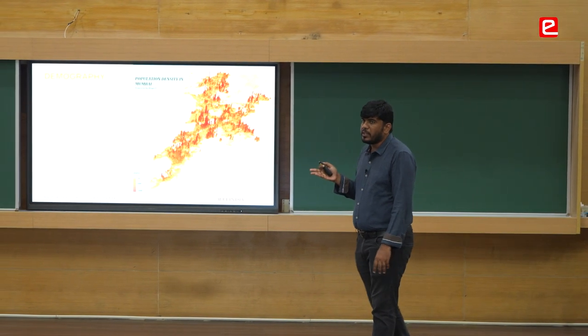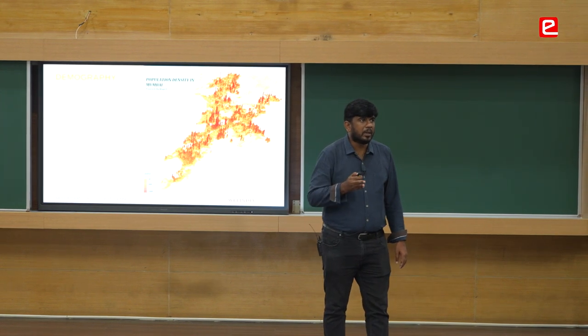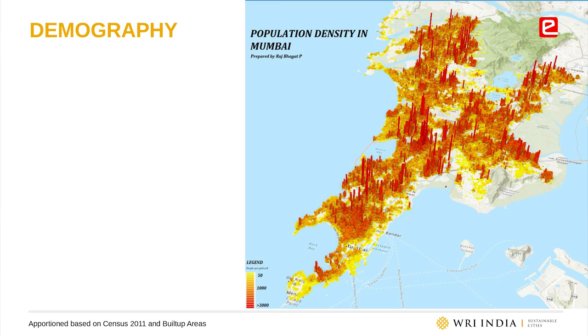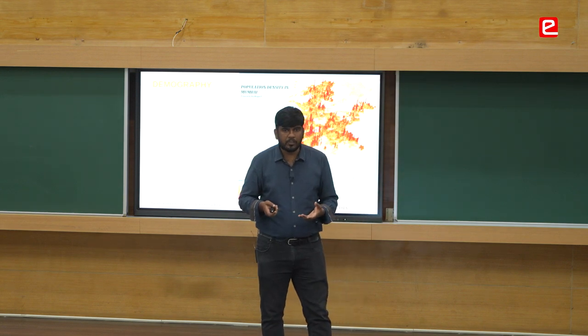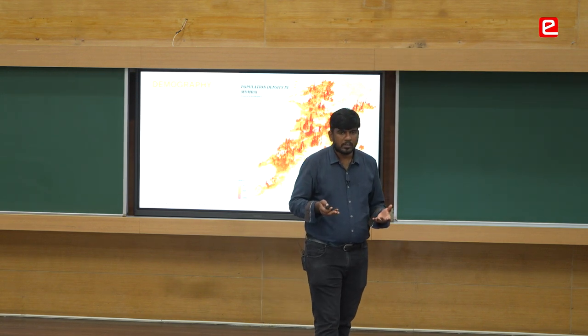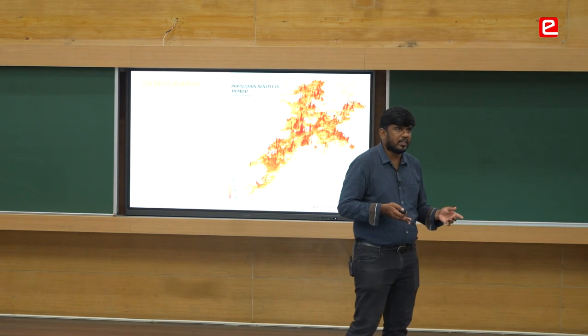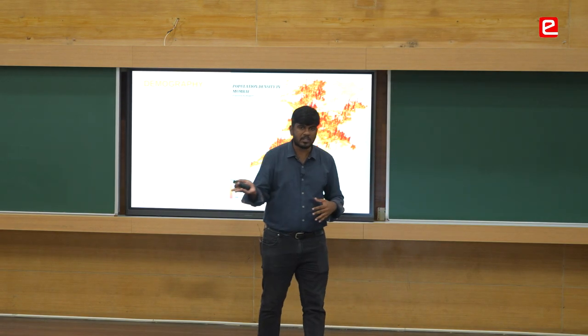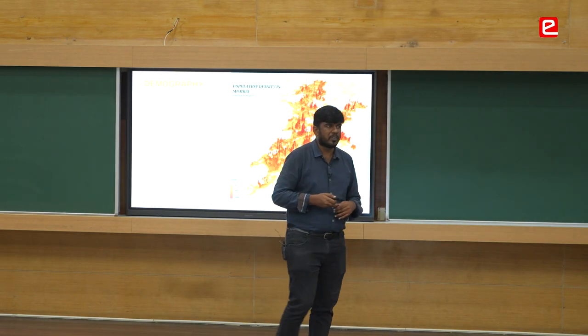If you are doing any transport mobility plans, you need to know how many people live there. If you are doing urban planning, you need to know how many people are living there — so you need the building footprints. In Bengaluru, we do the enumeration block level — 16,000 enumeration blocks for 83 lakh people as per the 2011 census.